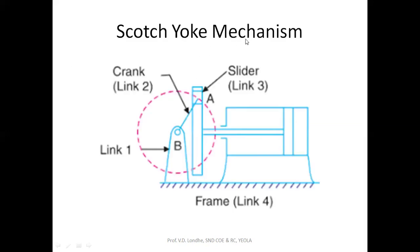The Scotch-yoke mechanism was developed by a scientist named Scotch, and the mechanism was named after him. It mainly consists of four links: one fixed link as a frame, a crank, a slider which slides in the slotted link four. The rotary motion of the crank is converted into the sliding motion of the slider — similar to a piston-cylinder system. It has two turning pairs and two sliding pairs, making it the first inversion of the double slider crank chain mechanism.